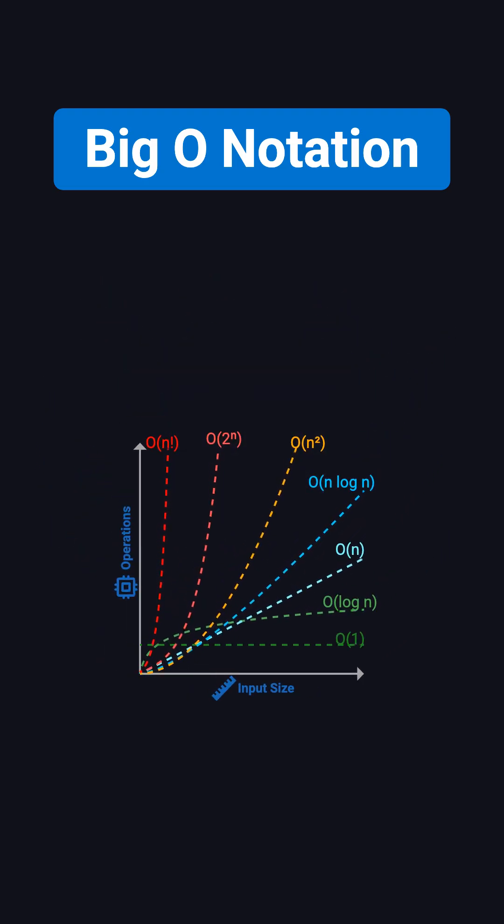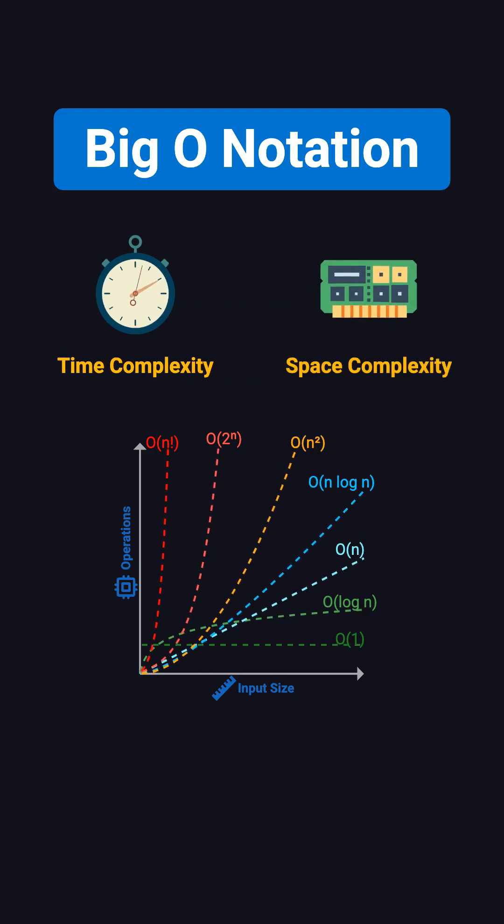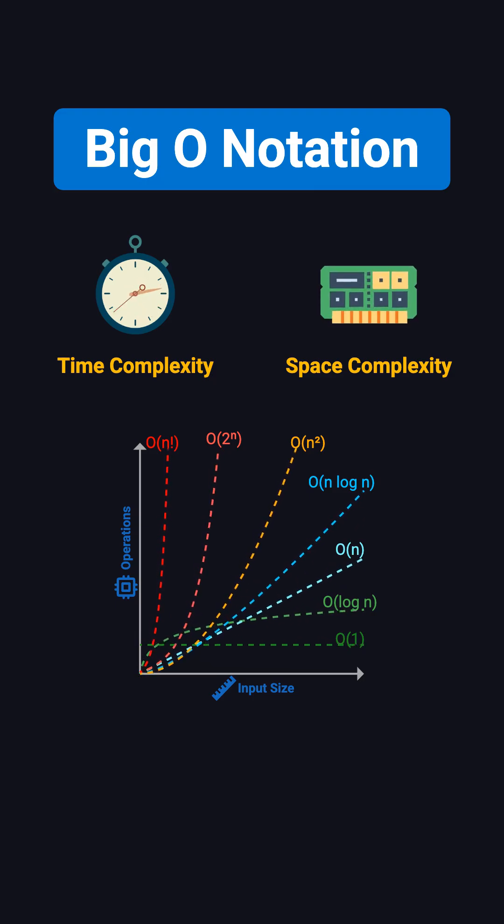In Big O analysis, we mainly focus on two things. The first is time complexity, which is how the running time changes as the input size n changes. The second is space complexity, which is how much memory the algorithm needs, and that can also change with n.